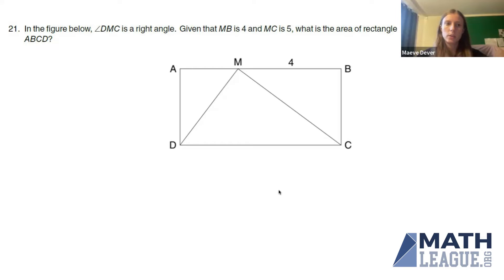Let's start by putting some labels on this diagram. MB is 4 and MC is 5. How do we find the area of a rectangle? We need to know the height and the width. The height looks easier; we could find BC.